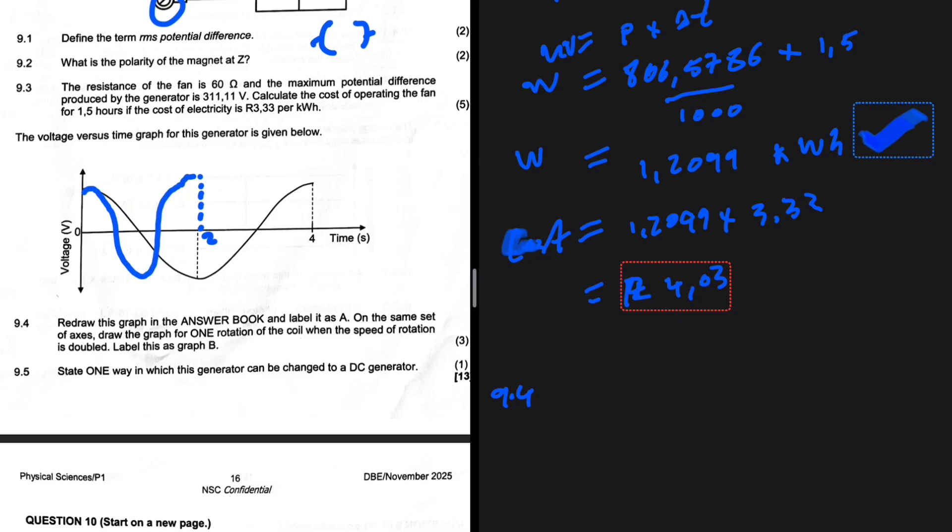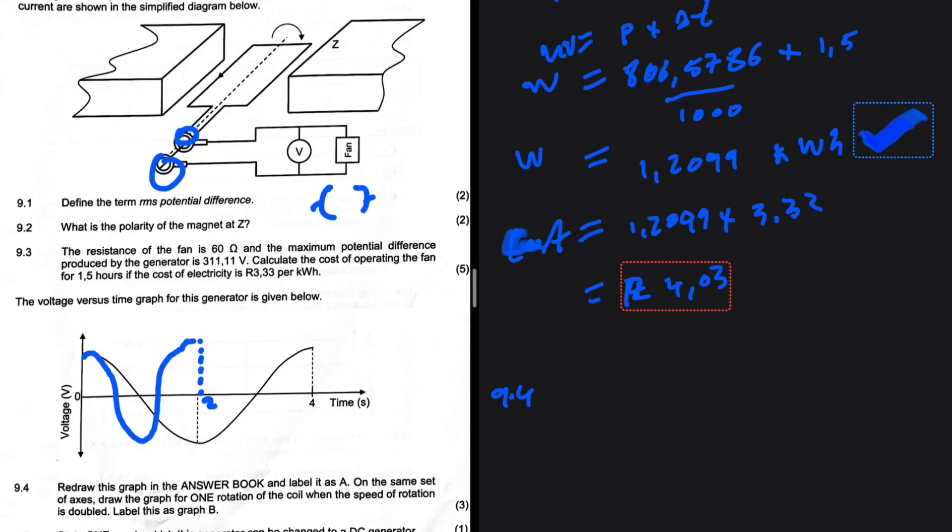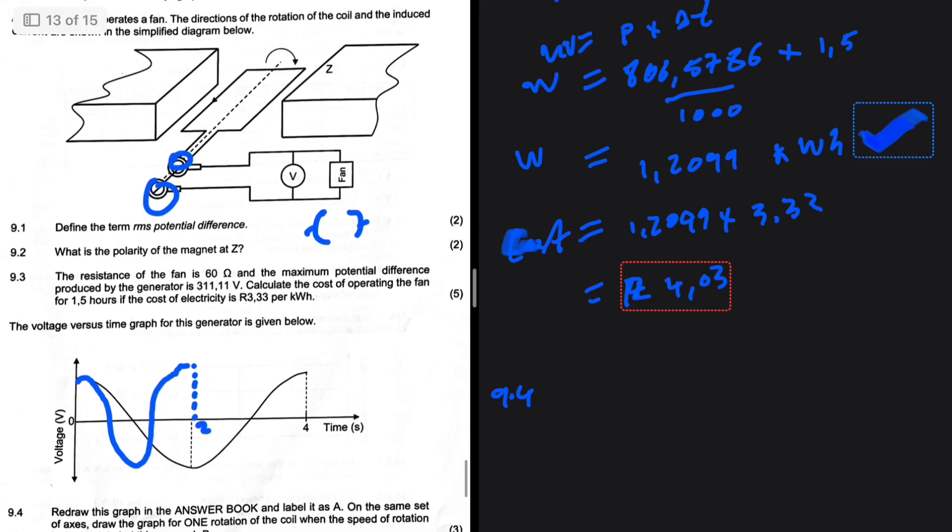Question 9.2: What is the polarity of the magnet at z? Is it north or is it south? Let me know in the comment section. Allpastpapers.com.